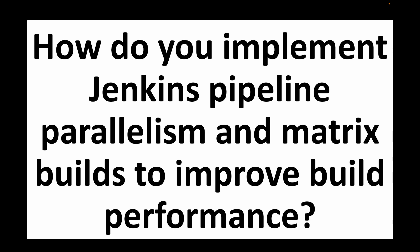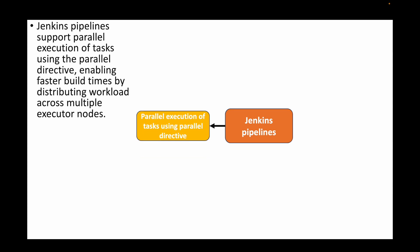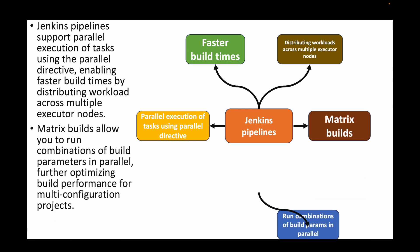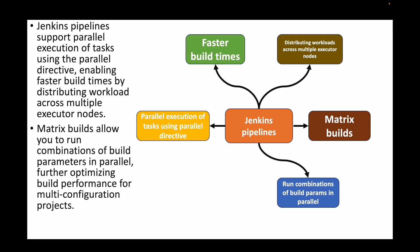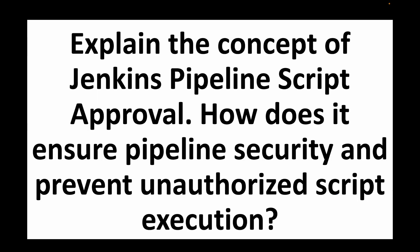The next question is: how do you implement Jenkins pipeline parallelism and matrix builds to improve build performance? Jenkins pipelines support parallel execution of tasks using the parallel directive, enabling faster build times by distributing workload across multiple executor nodes. Matrix builds allow you to run combinations of build parameters in parallel, further optimizing build performance for multi-configuration projects.